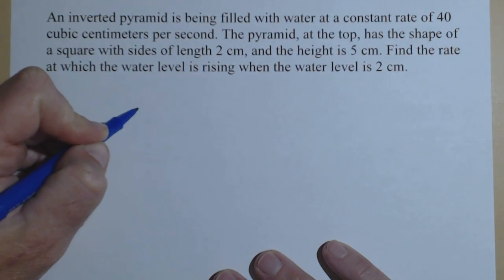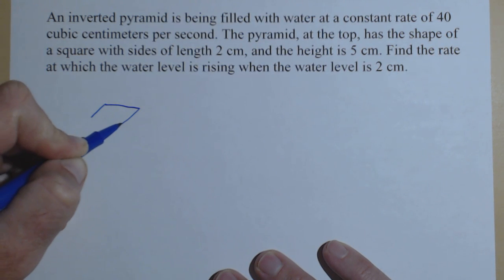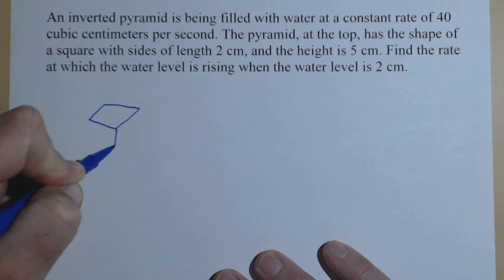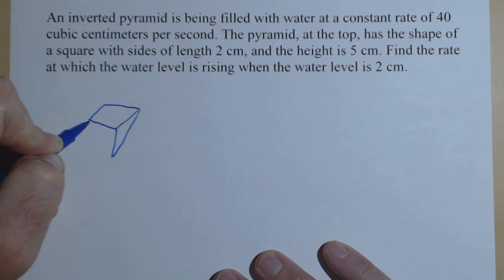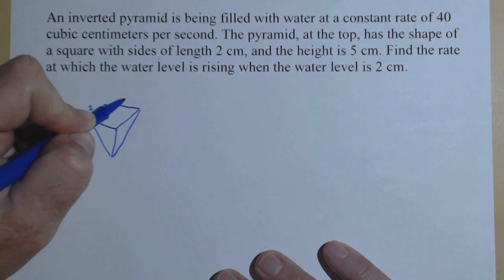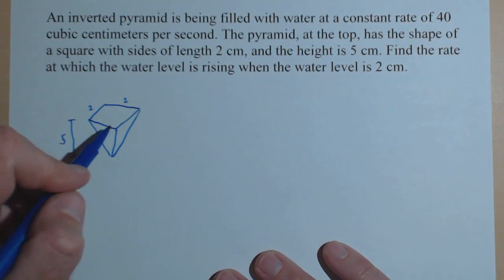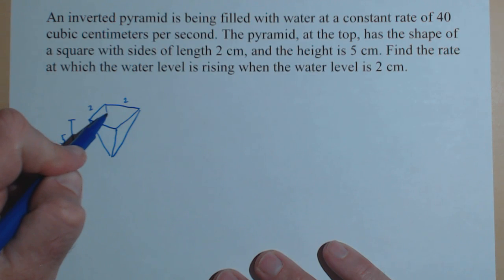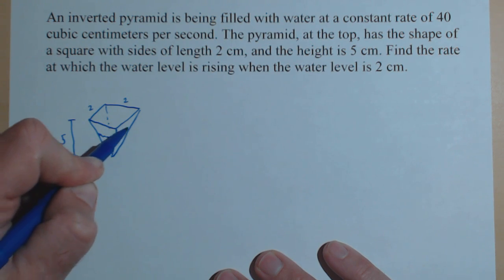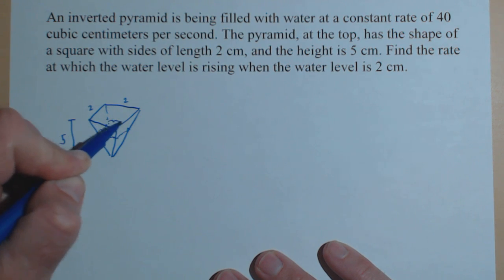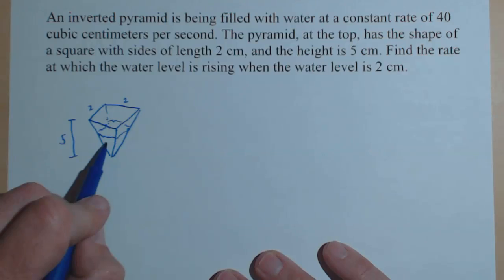Let's get a drawing of our pyramid. It's got a square top and a total height of 5, and this thing is 2 by 2. Maybe the water is right here, so we can kind of get an idea of what's going on. There's our water.